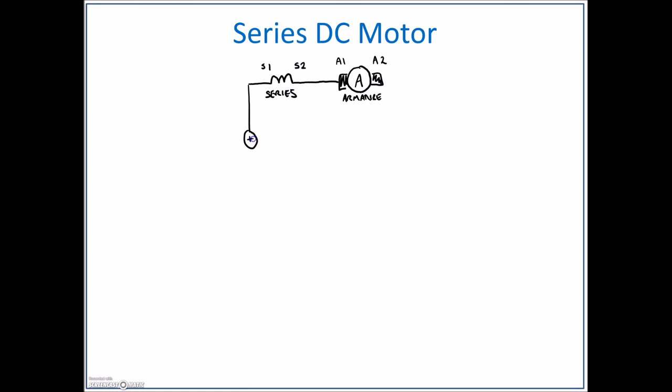I'm going to arbitrarily choose a polarity. I'm going to put a positive over here and a negative over on this side. That's as easy as it is to hook up the series DC motor. We have the outside magnetic field being the series, the inside magnetic field being the armature.